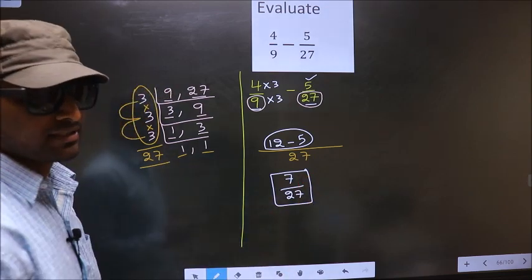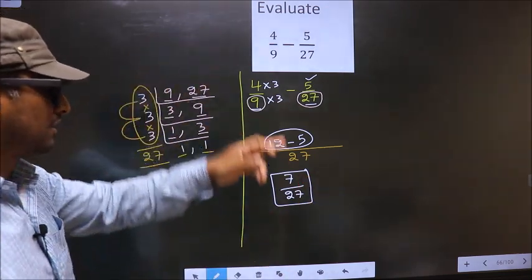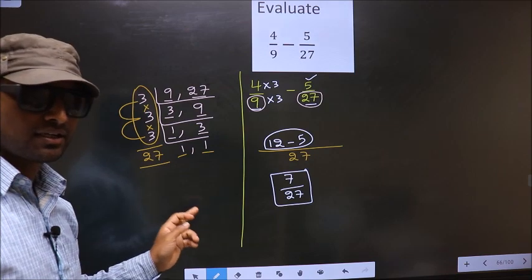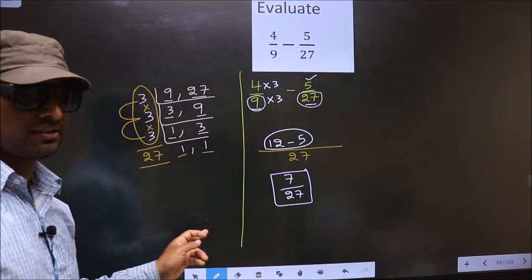Negative symbol as it is. Here we have 27. Here also 27. Both the numbers are same. So we don't need to multiply any number to this. We should write the numerator as it is. That is 5. Now you subtract.